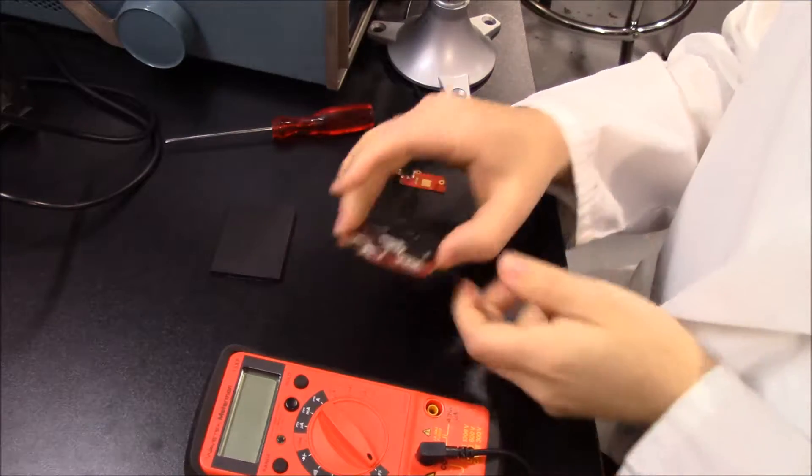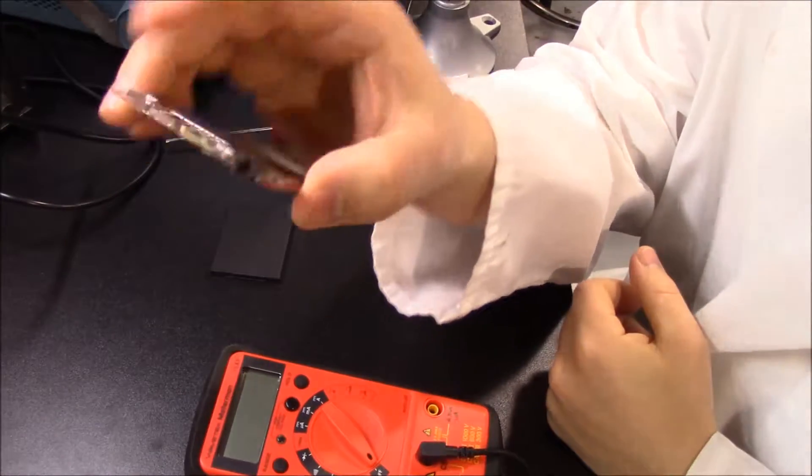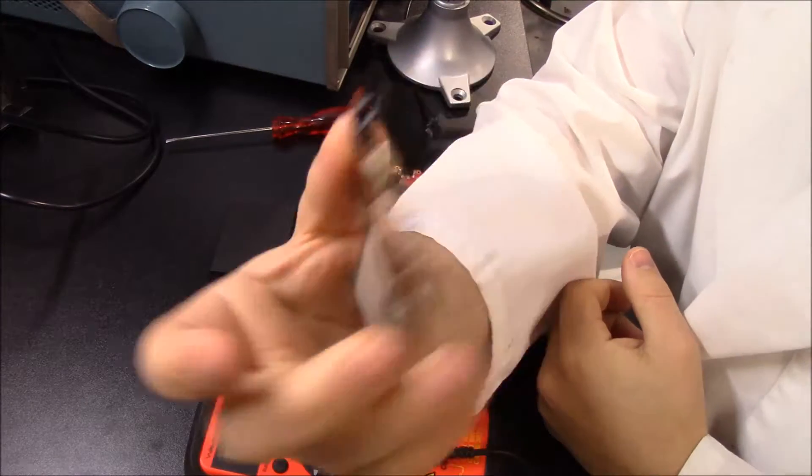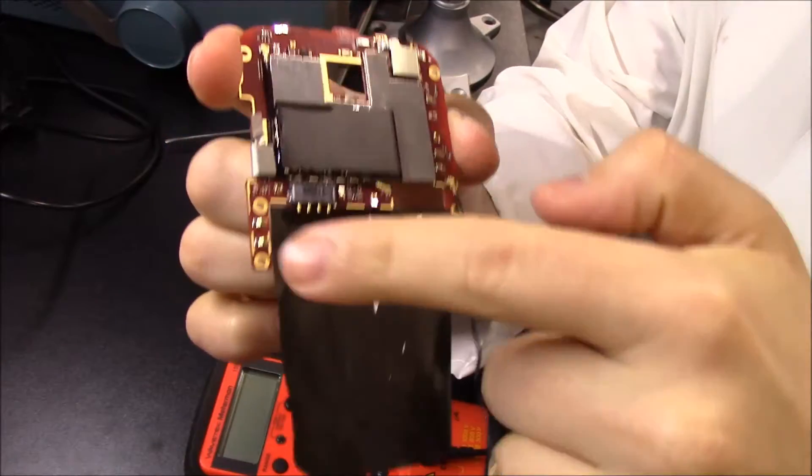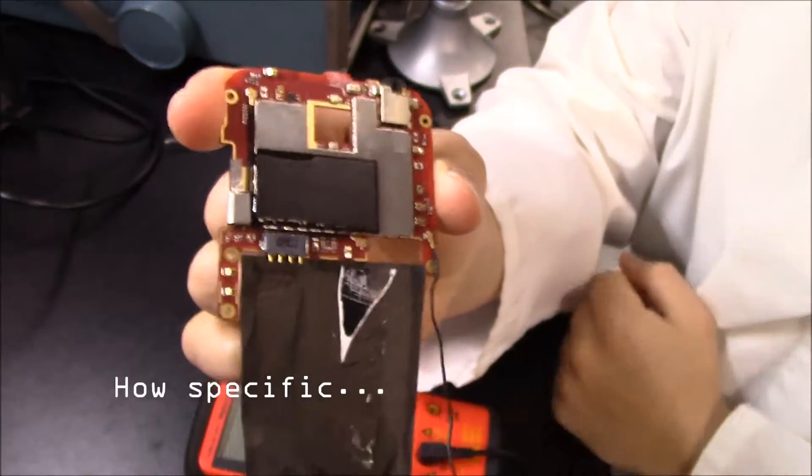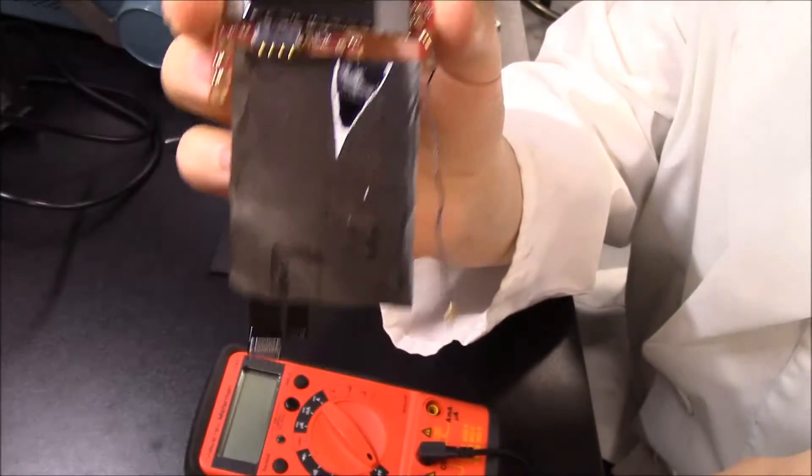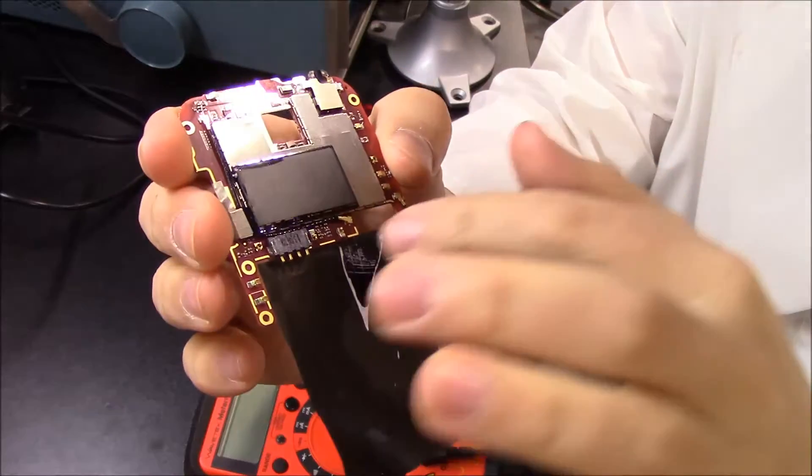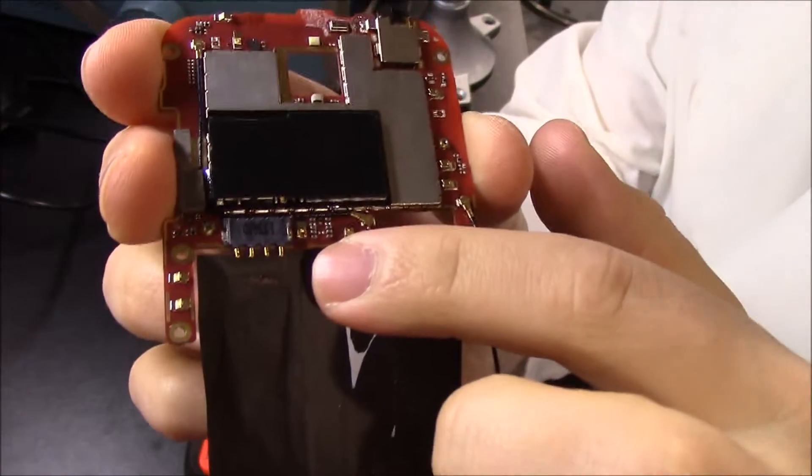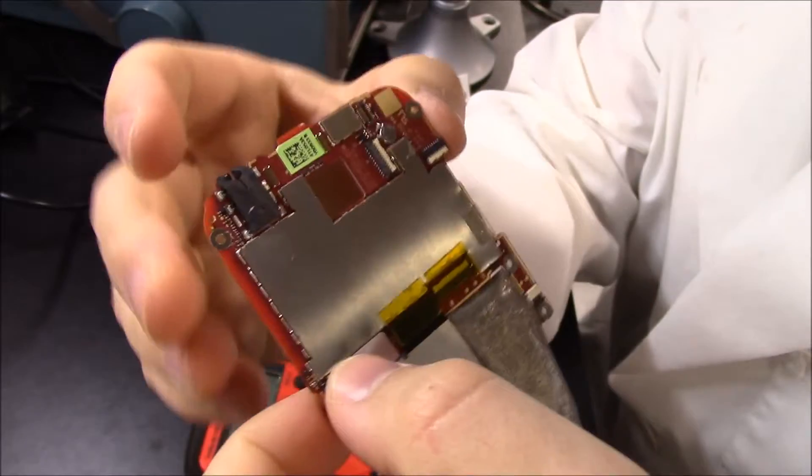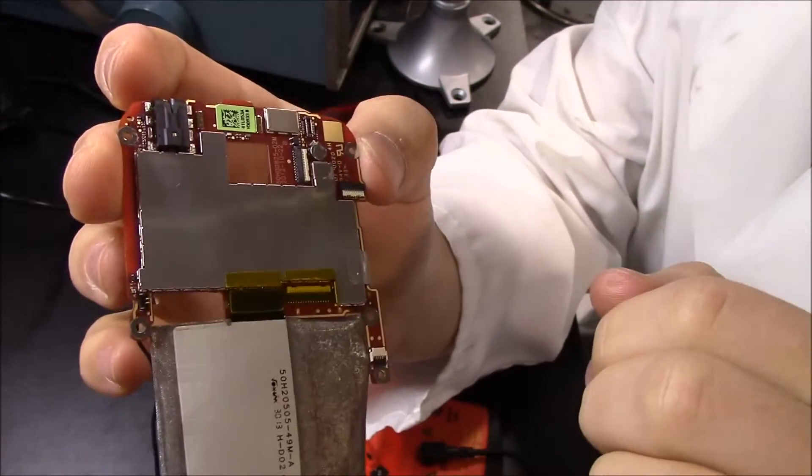And then we have the main guts of your cell phone. Somewhere in this area here is the charging circuit. Now, as you can imagine, it's quite compact. They do quite a few surface mount components.